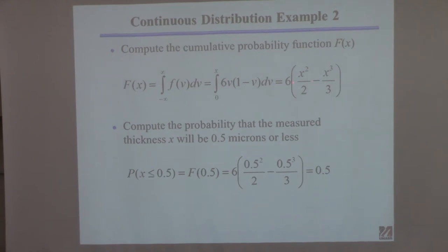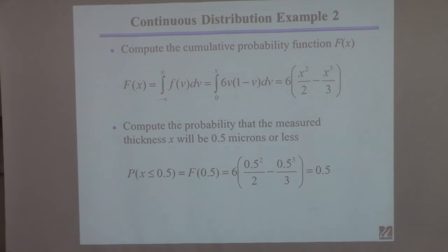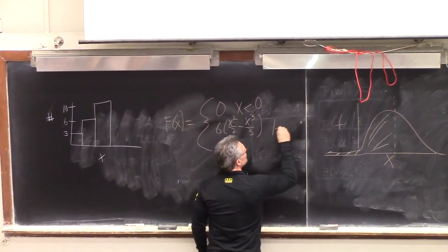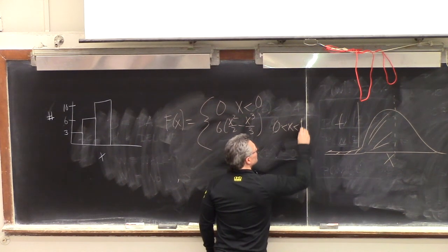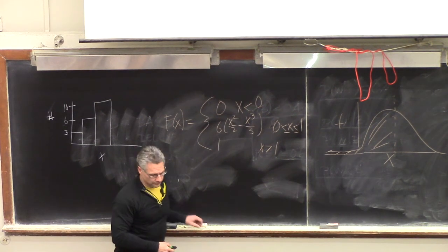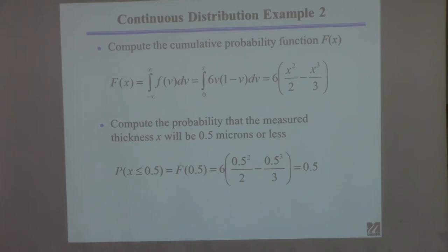If you evaluate the CDF outside the domain you'll get something incorrect, so to be explicit: F of x equals 0 if x is less than 0; it equals the expression I computed for x between 0 and 1; and it equals 1 if x is greater than 1. Otherwise, if you asked for the probability of a value 2 or less, you'd get something greater than 1, which is wrong.